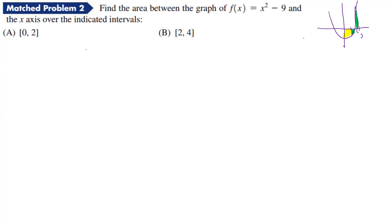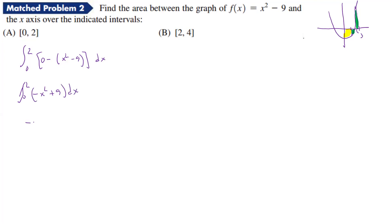There are two ways to think about this. From zero to two, the x-axis is on top, so we take zero minus (x² - 9), which gives us the integral from zero to two of (-x² + 9) dx. That simplifies to (-x³/3 + 9x) evaluated from zero to two.